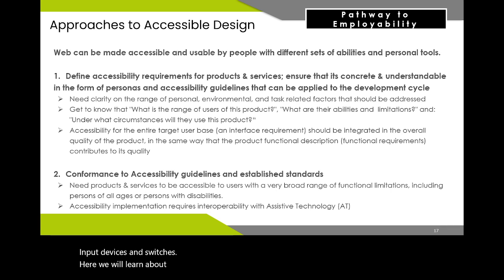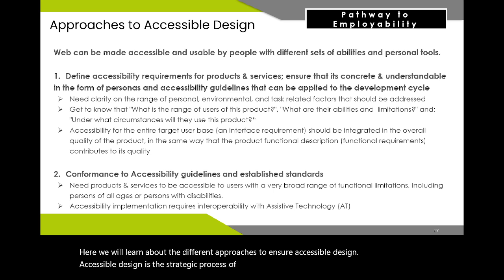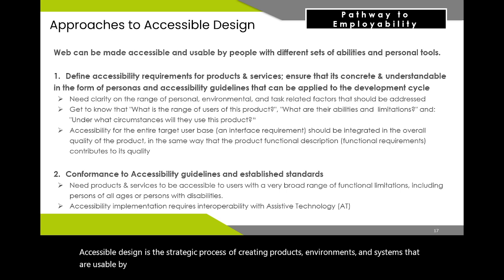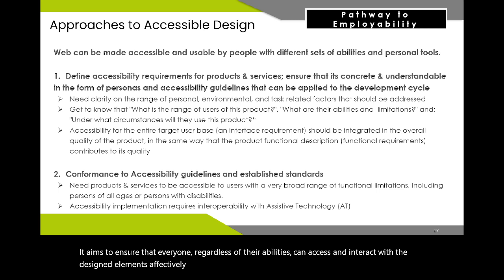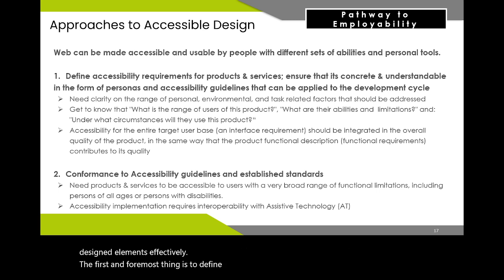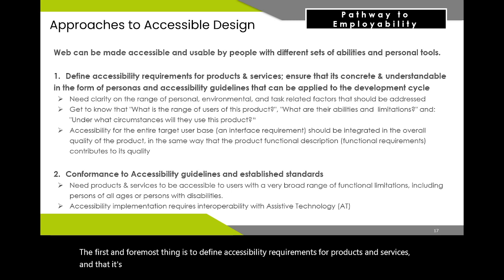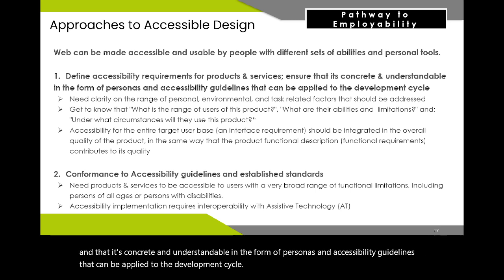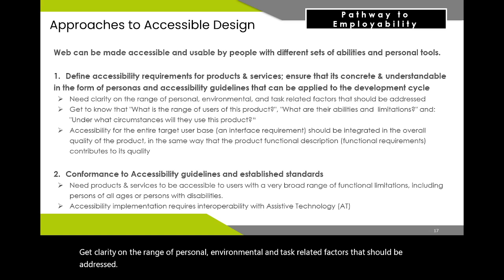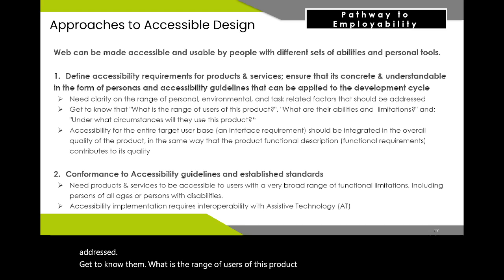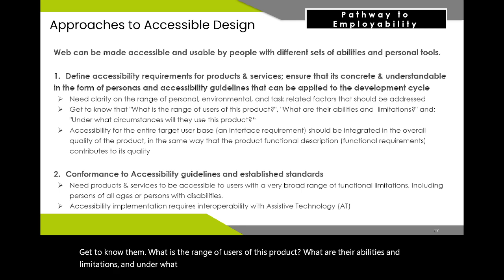Accessible design is the strategic process of creating products, environments, and systems that are usable by individuals with disabilities or special needs, ensuring that everyone regardless of their abilities can access and interact with the designed elements effectively. The first step is to define accessibility requirements for products and services in a concrete and understandable form — as personas and accessibility guidelines that can be applied to the development cycle. Get clarity on the range of personal, environmental, and task-related factors to be addressed, the range of users, their abilities and limitations, and under what circumstances they will use the product.